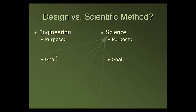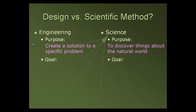The main differences between the engineering design process and the scientific method are the purpose and the goal. For engineering, the purpose is to create a solution to a specific problem. In science, the purpose is generally to discover things about the natural world — such as physics and how things move, how gravity affects things, or biology, like why animals hibernate and what happens with their metabolic rates during hibernation. It's just about discovering things.